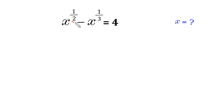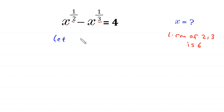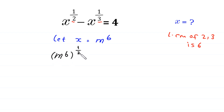Since the LCM of 2 and 3 is 6, we suppose that x is equal to m to the power 6, and we substitute m to the power 6 in place of x. Then this equation will become m to the power 6, whole to the power 1 over 2, minus m to the power 6, whole to the power 1 over 3, is equal to 4.